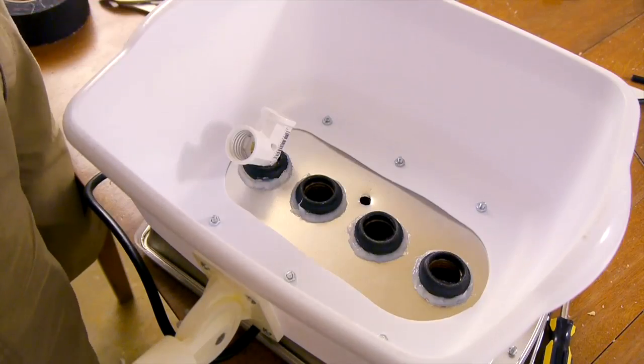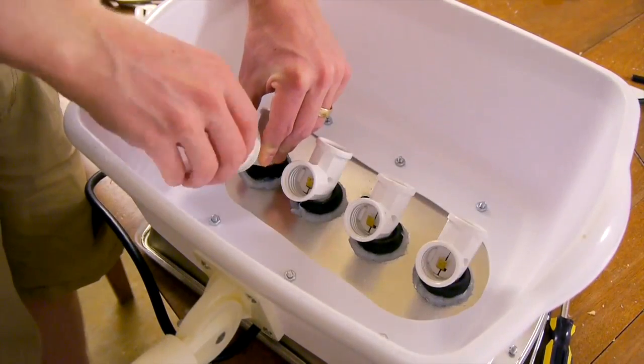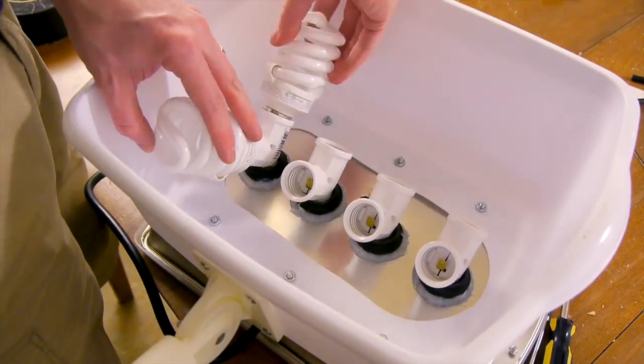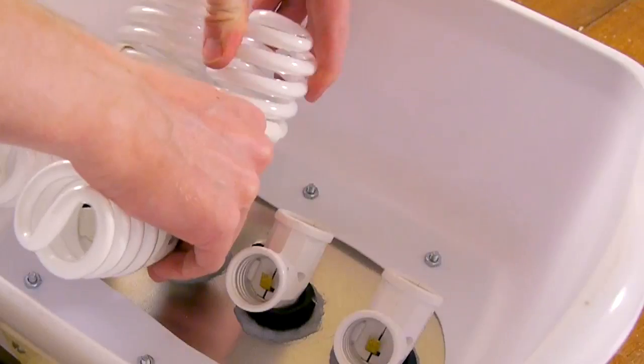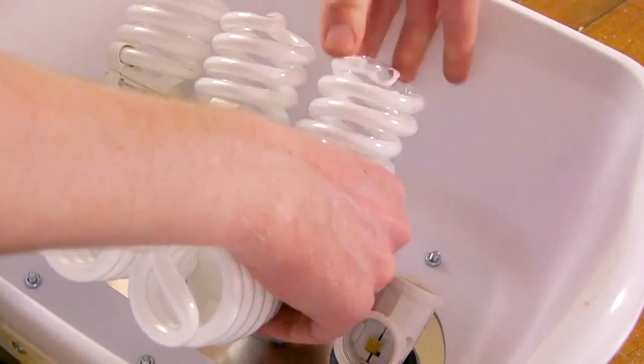I'm using socket splitters because they're cheaper and easier than installing four more sockets, and I'm hoping that by installing the bulbs at an angle, more light will shine forward. Be gentle when handling CFL bulbs, and you should screw them in by the base, or this could happen. Ah!